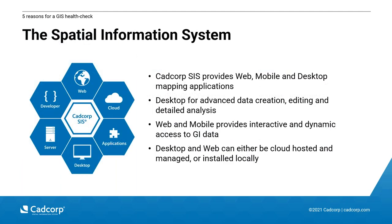This infographic gives an overview of what the Spatial Information System is. We provide that system to deliver web, mobile, and desktop-based mapping applications. The desktop GIS is used for the creation and editing of GIS data, supports many different data formats, and provides detailed analysis such as routing analysis, hotspot analysis, and thematic maps. It's also used as the administration tool for publishing data to the web.